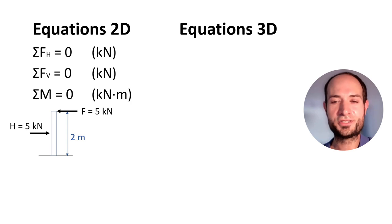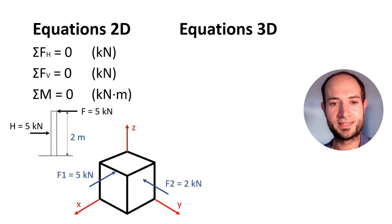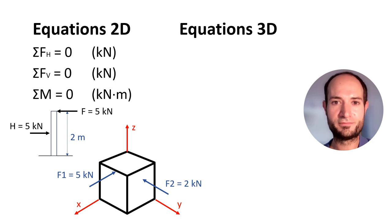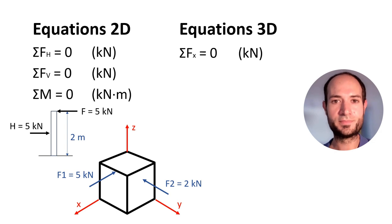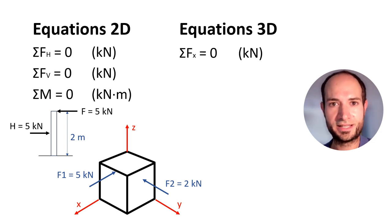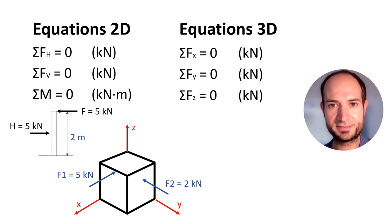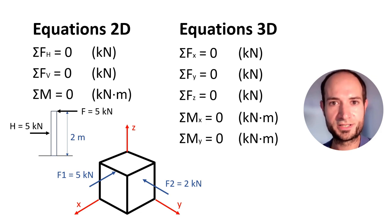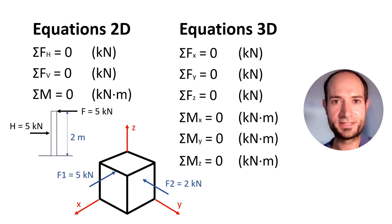And if we consider a 3D structure, we get six equations. For every axis we have loads and moments. So the sum of all loads acting on x equals zero, and the same for y and z. And the sum of all moments on the x-axis equals zero, same for y, and same for z.